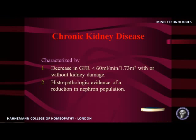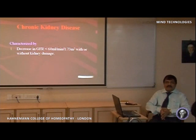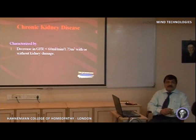Chronic kidney disease is characterized by a decreasing glomerular filtration rate of less than 60 ml per minute per 1.73 square meter body surface area, with or without kidney damage. When I say without kidney damage, it means the glomeruli are still intact — they are still performing filtration but at a lower rate, and no anatomical or structural damage has occurred.